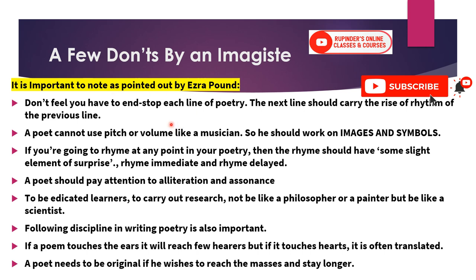Pound says don't feel you have to end and stop each line of poetry — the next line should carry the rise of rhythm of the previous line. For example, from Robert Frost: 'The woods are lovely, dark and deep, but I have promises to keep, and miles to go before I sleep, and miles to go before I sleep.' There is rhyme, rhythm runs through it, and things come automatically to mind. This is why children can recite rhymes even before they are taught chapters — learning with rhythm is easier.